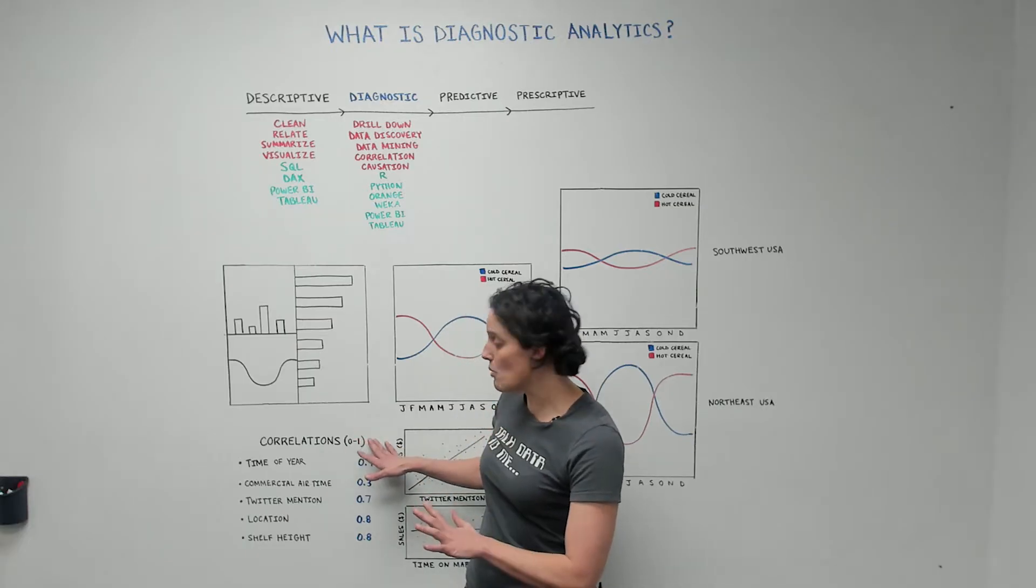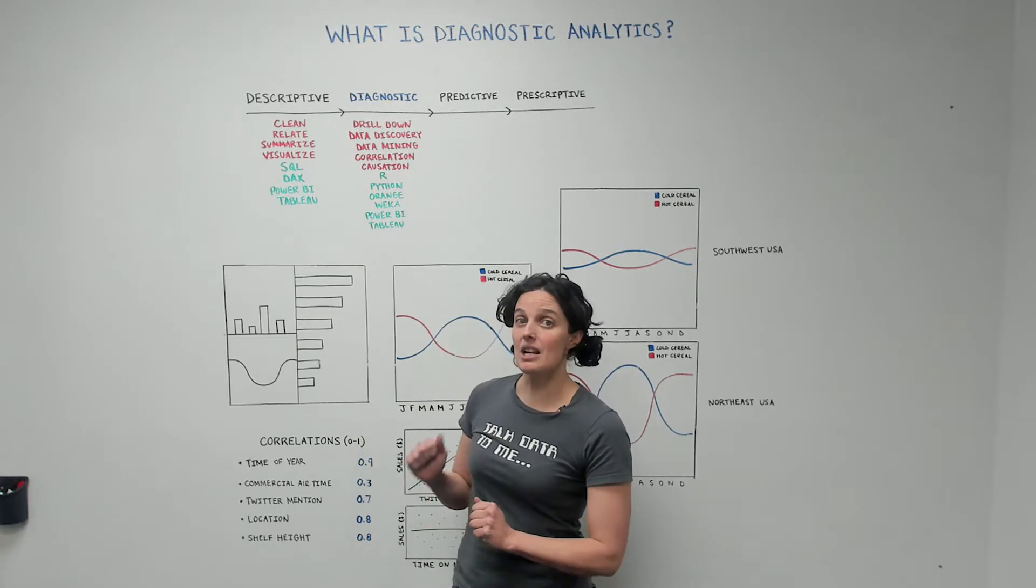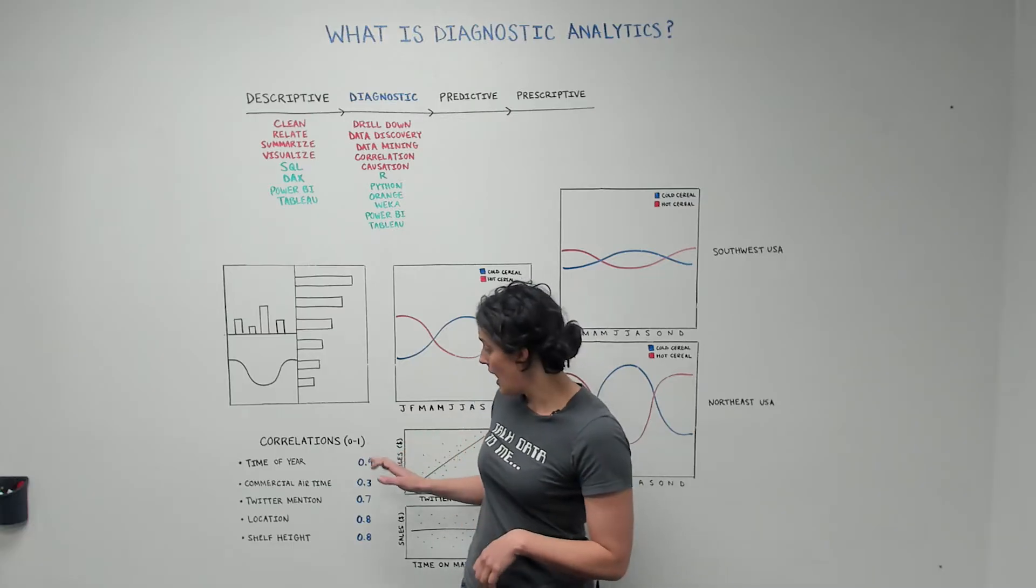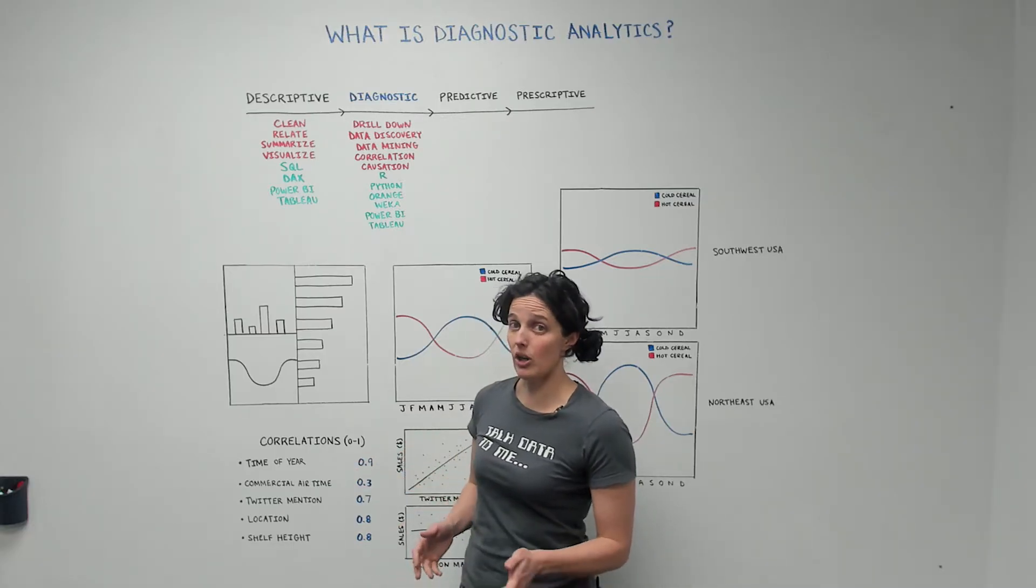And it's going to spit out a number between zero and one. One would mean that it's very highly correlated and zero would mean that it's really not correlated at all.